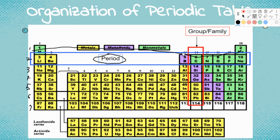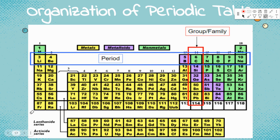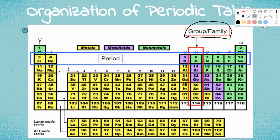Now let's look at the groups or families. We just talked about the periods — the rows. Now we're talking about the columns, the vertical ones. The way they're broken up into groups is: if you look at this first column, on its outer shell it only has one electron. All of these in this column have just one electron on their outer shell. The second column has two electrons on their outer shells.